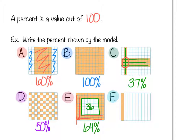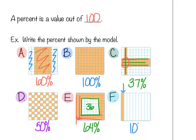In example F, instead of 100 squares they've given 10 columns. One tenth is the same as 10 percent because each of those columns would have 10 squares in them.